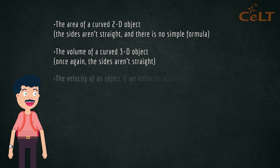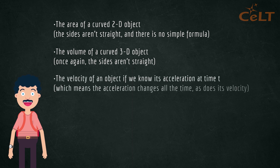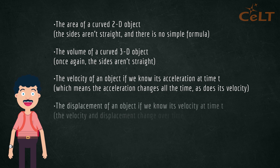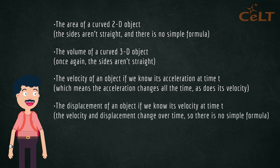The velocity of an object: if we know the acceleration at time t, which means the acceleration changes all the time, we can find velocity. Similarly, the displacement of an object: if we know its velocity at time t, the velocity and displacement change over time, so there is no simple formula.